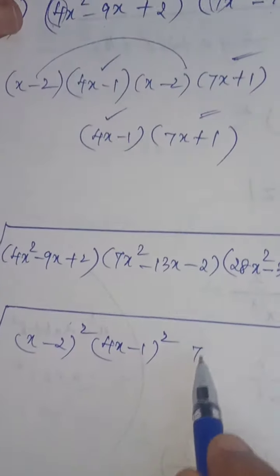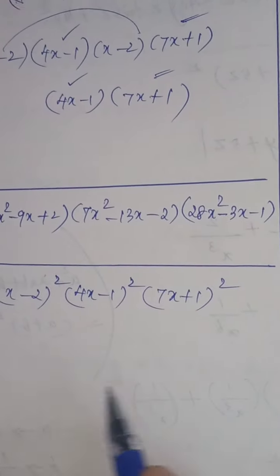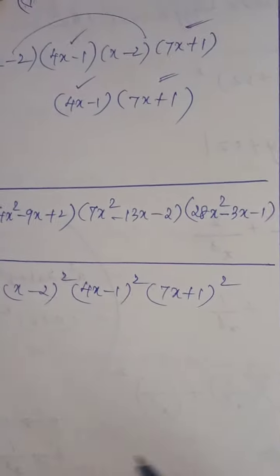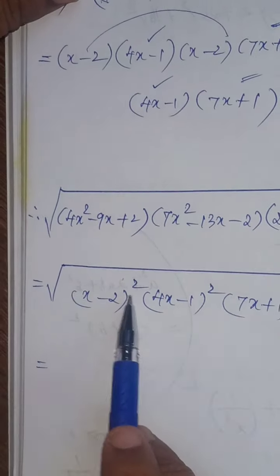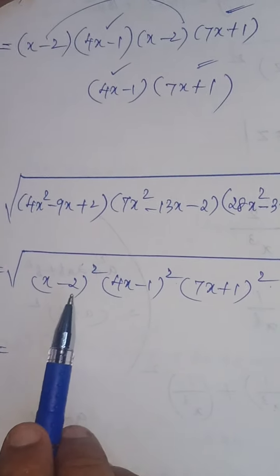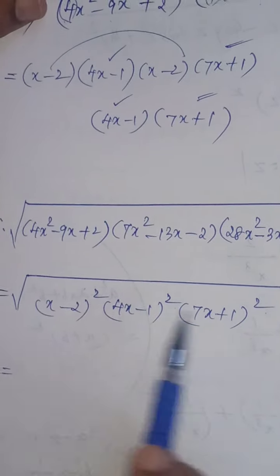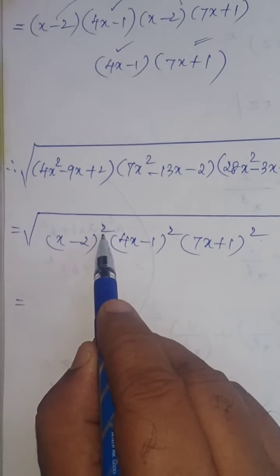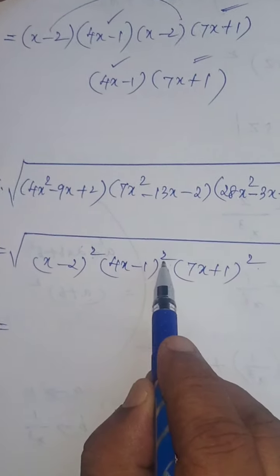Right now you can directly write the answer. Here square, here square, here square and just you have to write half of the power for each and every one. The 2 becomes 1, half of the power of 2 is 1, half of the power of 2 is 1, half of the power of 2 is 1.